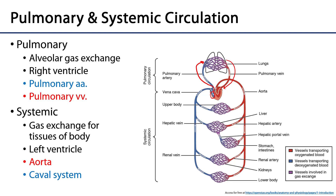We can contrast that with systemic circulation, which begins in the left ventricle of the heart. Blood is pumped out through the aortic valve, through the main conduit, the aorta. That blood is returned back to the heart after supplying metabolically active tissues of the body with oxygen for chemiosmosis via the caval system — there is an inferior vena cava and a superior vena cava that return that blood to the right atrium.